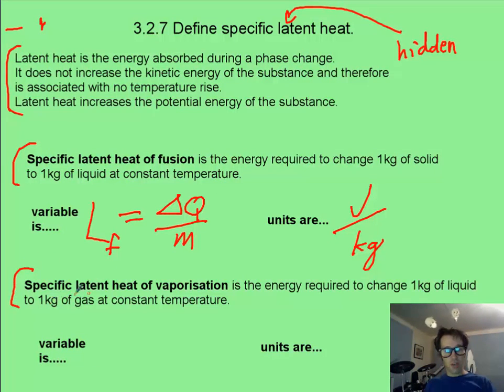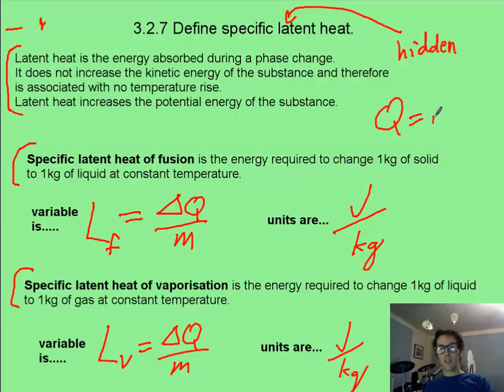Specific latent heat of vaporization, same type of thing, except now we're going from a liquid up to a gas. Or you could be going in reverse, from a gas back to a liquid. That's going to be L sub V. And it's going to be change in energy per unit mass. And the units are still the same. Often, you will see these things rearranged in your equations as M times L. And this could be either L sub F or L sub V.